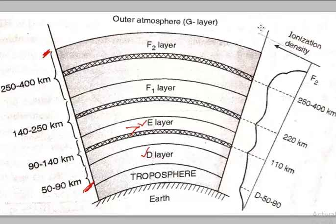As mentioned earlier, ionization is predominant at very high altitudes because the power of the sun's rays is higher at higher altitudes. As we move downwards the ionization decreases, but we still have ionization in all four layers of the ionosphere.